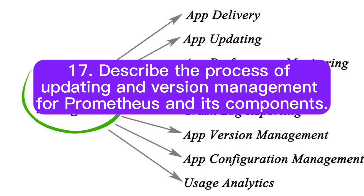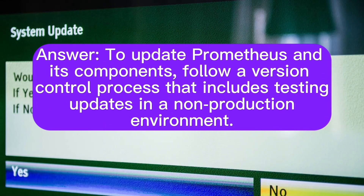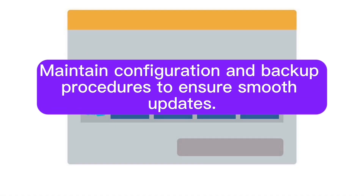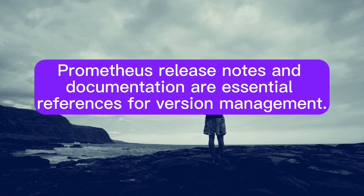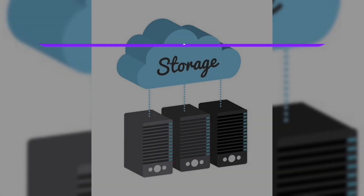Describe the process of updating and version management for Prometheus and its components. To update Prometheus and its components, follow a version control process that includes testing updates in a non-production environment. Maintain configuration and backup procedures to ensure smooth updates. Prometheus release notes and documentation are essential references for version management.